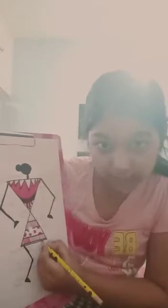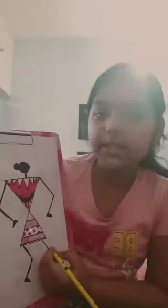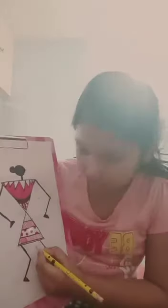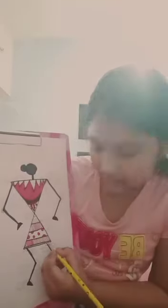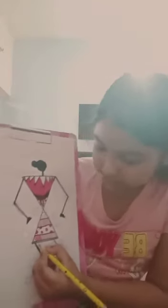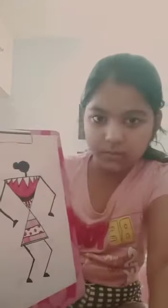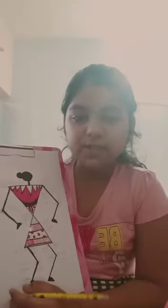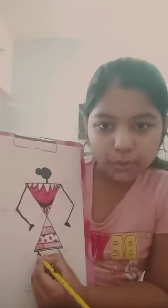This is an obtuse angle because it is more than 90 degrees. It is obtuse angle. And this one is an acute angle. Now for the hair — looking at the right side and left side — this is an acute angle and this one is an obtuse angle.